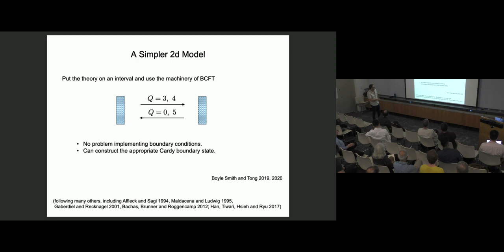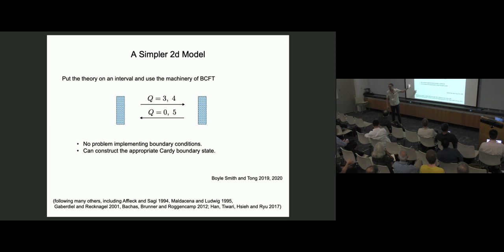We constructed the boundary state following many papers over many decades of people who did similar things, and computed basically everything computable in this theory. And yet it was a little embarrassing giving talks, because I would compute everything and show all the details, and then someone would ask: 'if you throw in a three, what bounces back?' — which is obviously the right question to ask. And I didn't have a good answer. I couldn't extract it from the mathematics. So what we did in the paper a couple of months ago was understand the answer to that simple question: what bounces back if you throw in a charge-3?